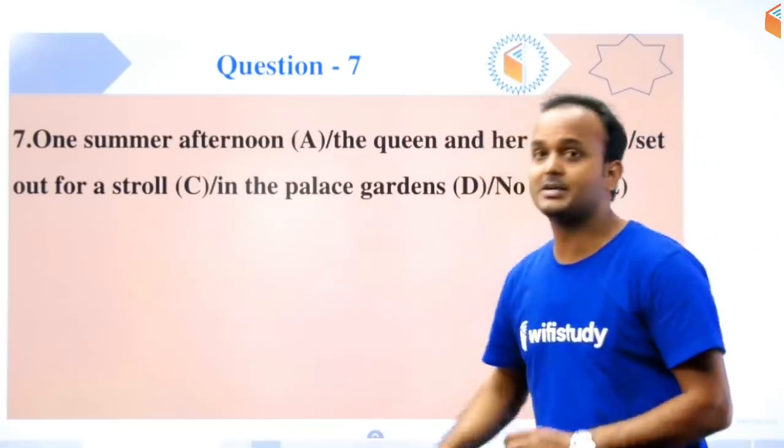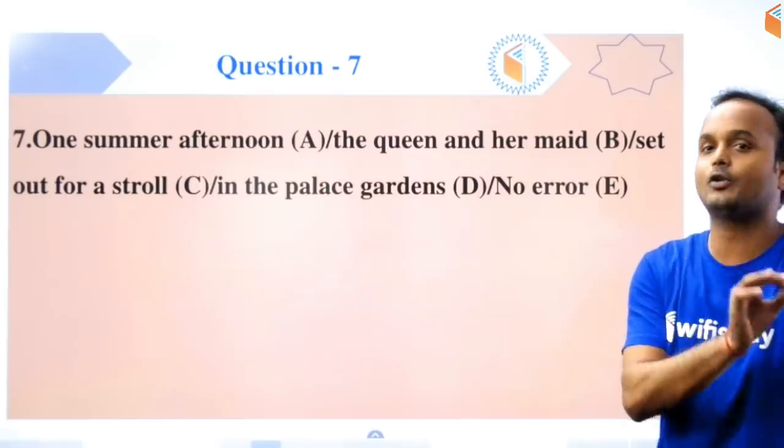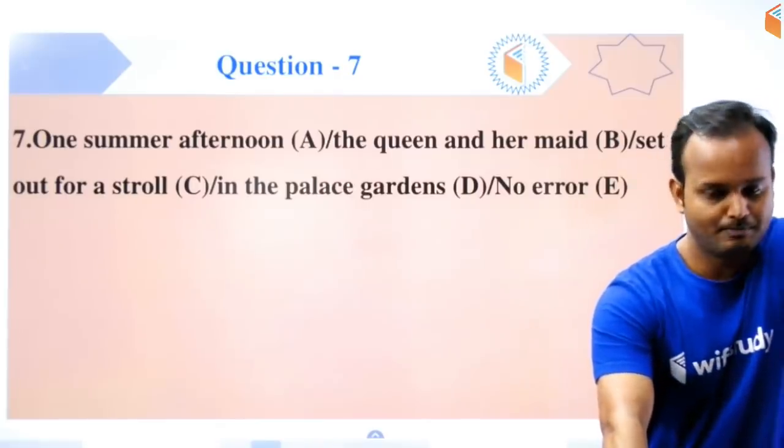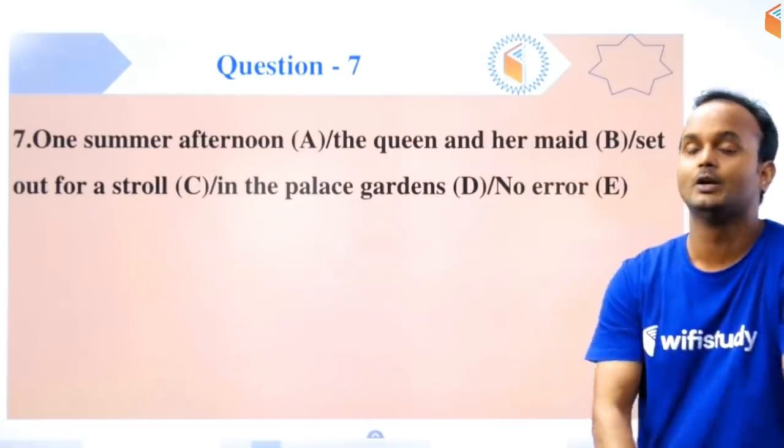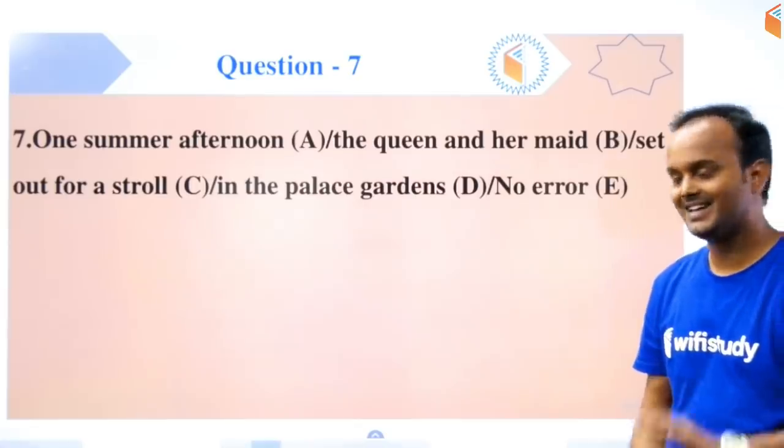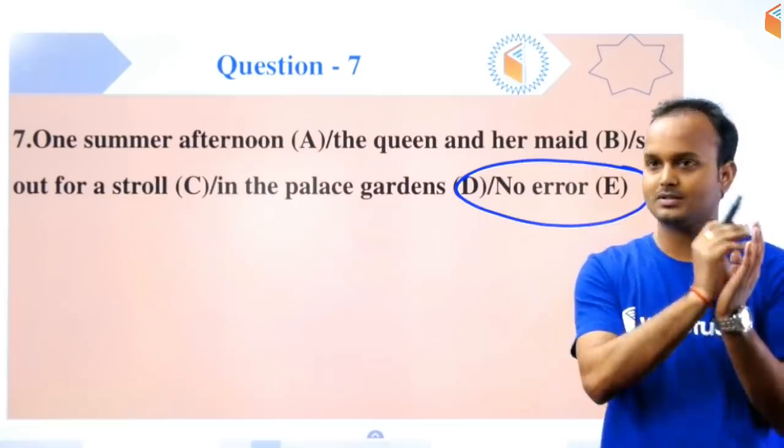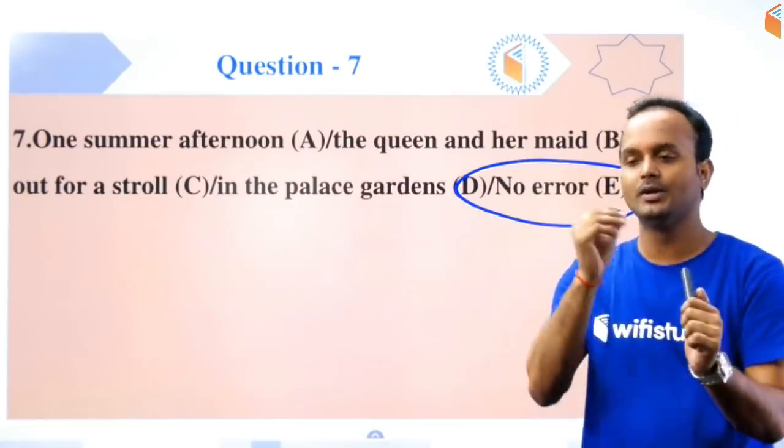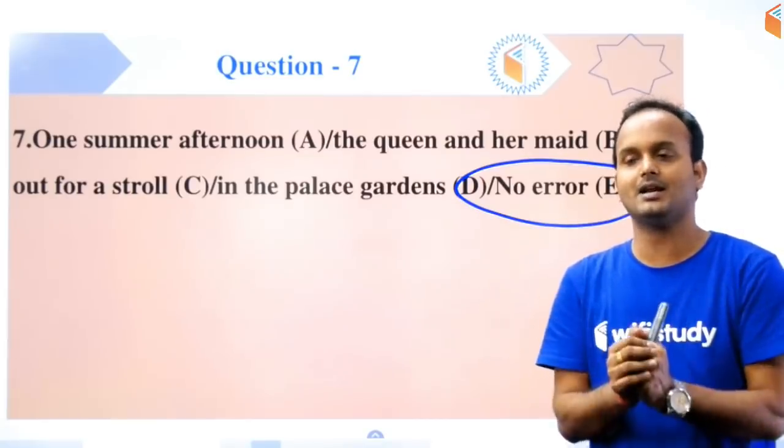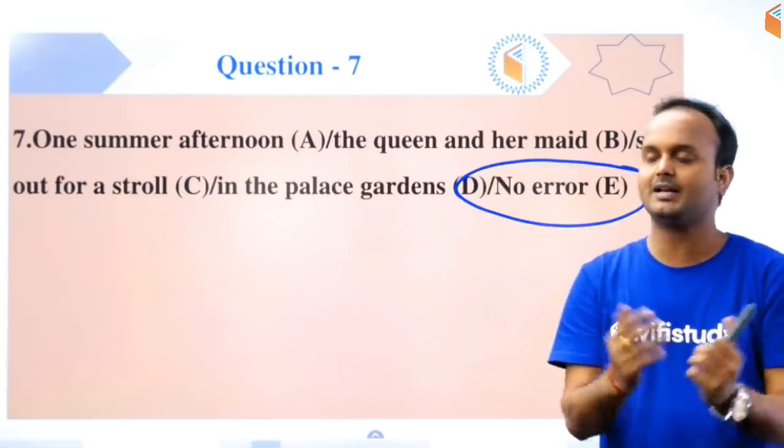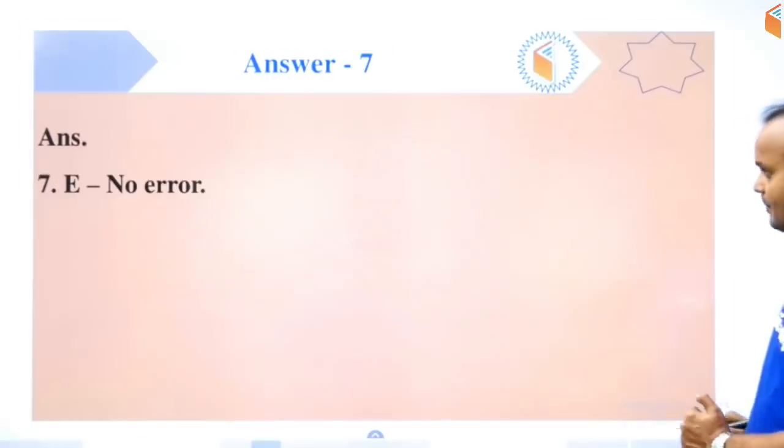Question number seven: 'One summer afternoon the queen and her maid set out for a stroll in the palace gardens.' Good question, this is the best question so far. Question number seven is great because there's no error in this either. You're watching NDA, CDS, Stenographer, CPO, CHSL, MTS - this is a class for preparing for these and other exams where you'll get concepts, questions, practice, and confidence. The answer for this is also no error.